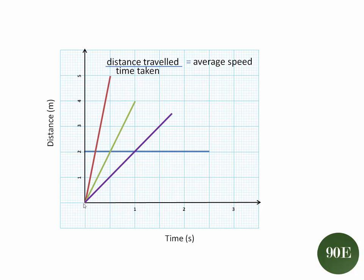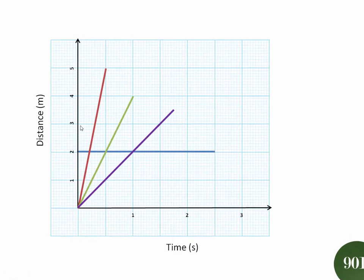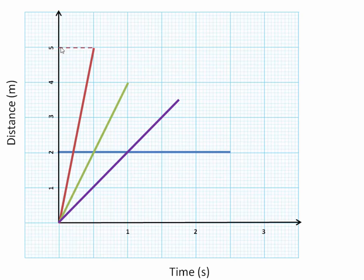But rather than trust me on that one, let's do a few calculations just to be sure. So first we'll try to calculate the average speed of the object whose journey is represented by the red line. So we need to look at the distance that was travelled, that is 5 metres. And we need to look at the time that it took, which is half a second. So it's travelling 5 metres in half a second. So that means that its average speed is 10 metres per second.